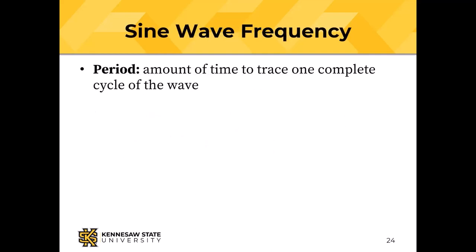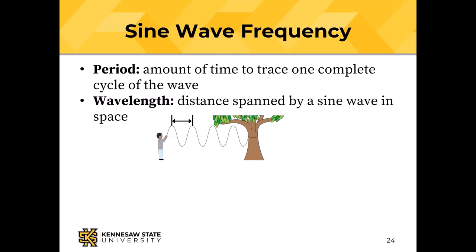The period of a sine wave is how long it takes for one complete cycle. The wavelength is the distance in space — if you tie a rope to a post and shake it, you can create standing sine waves. The wavelength depends on both frequency and the transmission medium.